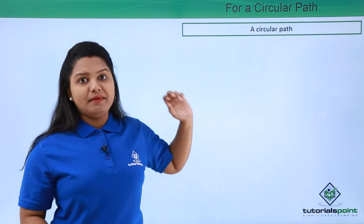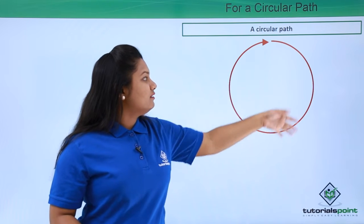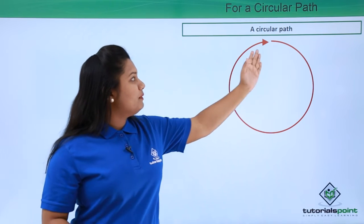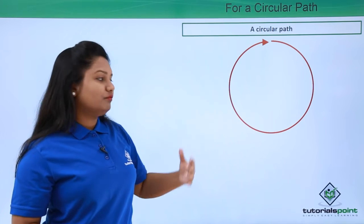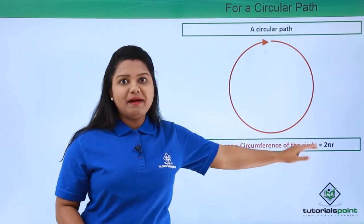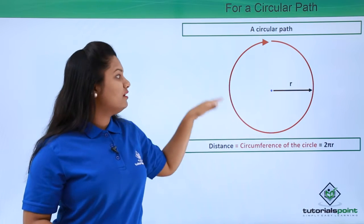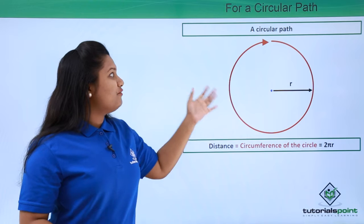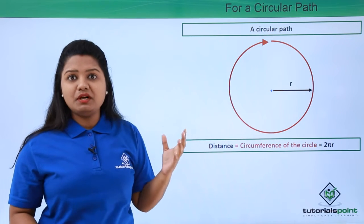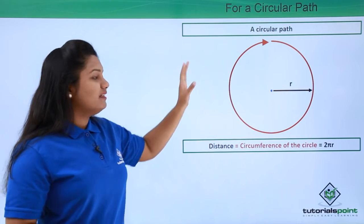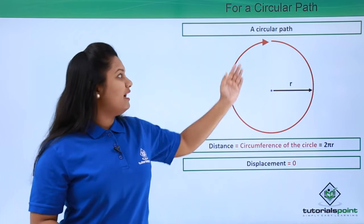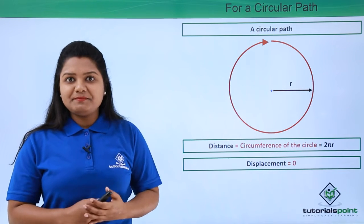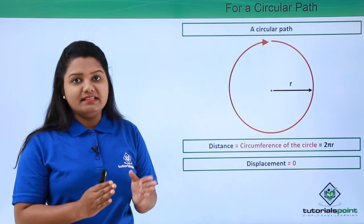Now suppose I have a circular path and I travel the whole path. What will be the distance and the displacement? The distance will be the length of the whole path, which is the circumference of the circle — formula 2πr, where r is the radius. The displacement will be 0, because I have reached the point where I started — the initial point equals the final point. Even though I covered some distance, the displacement is still 0.